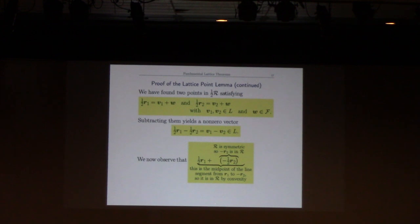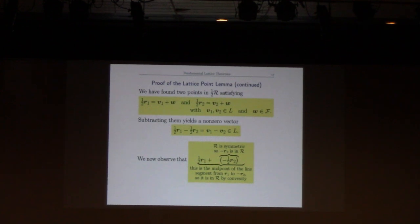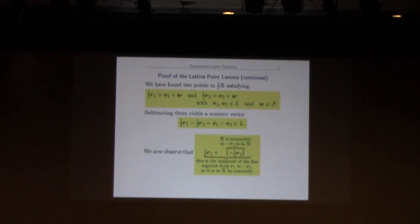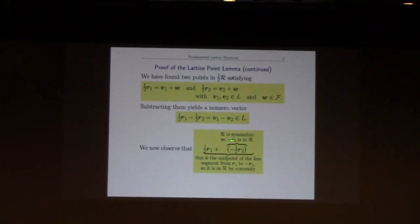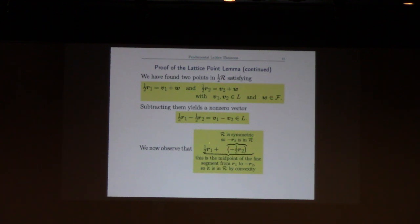This is where we use all those properties about R that we started with. I take one half r1 minus one half r2 and I cleverly write it as one half r1 plus negative one half r2. Now, minus r2: since R is symmetric, r2 is in the region, so minus r2 is in the region. And r1 is in the region R.